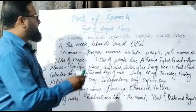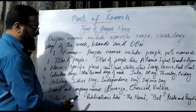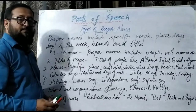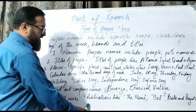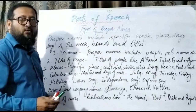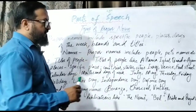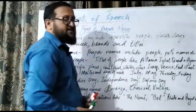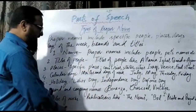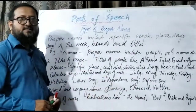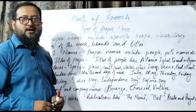Titles of works — these are things like some artwork, publications like The News, ARY, Pride and Prejudice. These kinds of names are specific names and are titles of works. So these are the specific seven types of proper nouns.